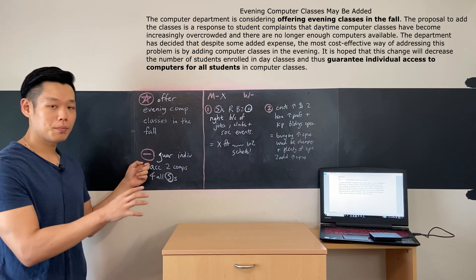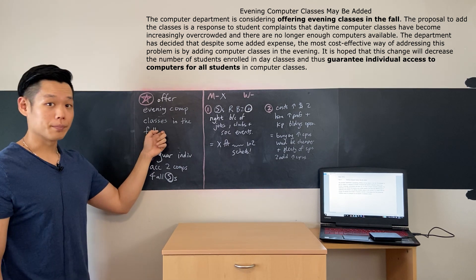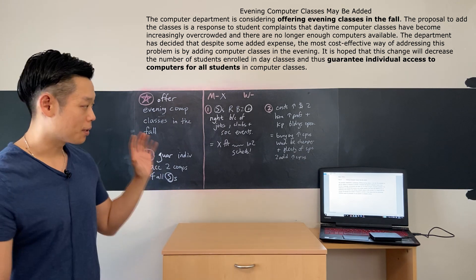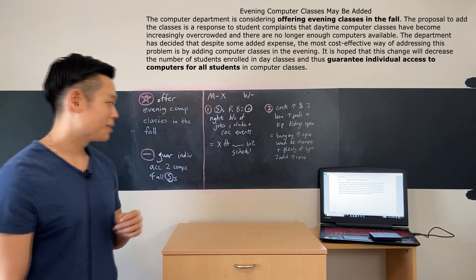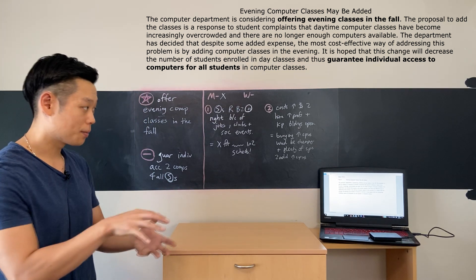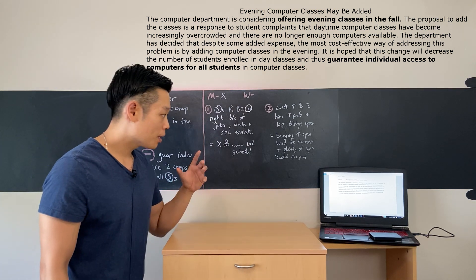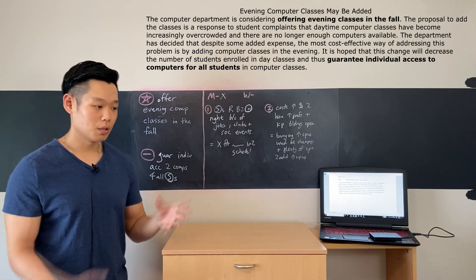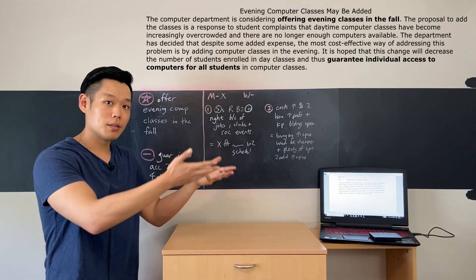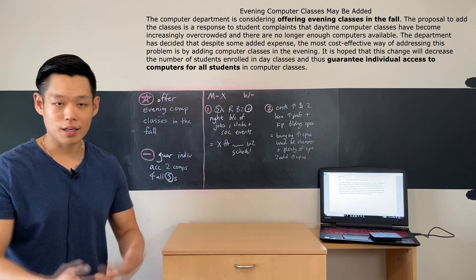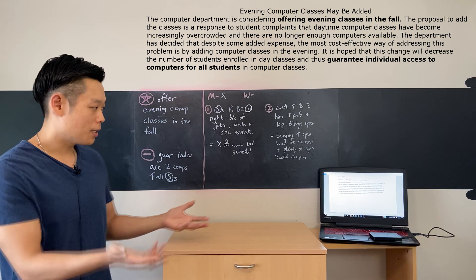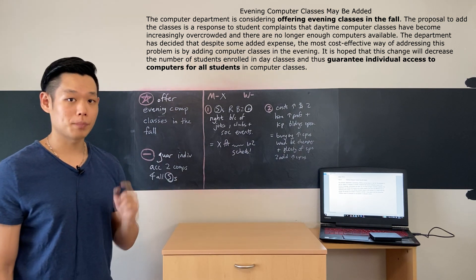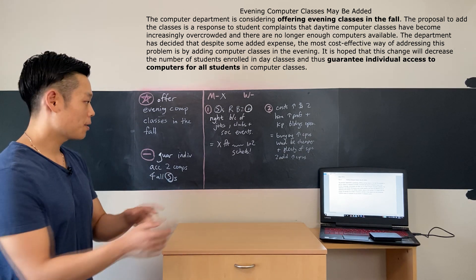Now let's keep looking at the passage to find the suitable information for the ending statement, which for an announcement has to be the advantage, the upside, or the benefit of the new plan. The proposal to add the class is a response—it's not an upside, it's a reason, I'm gonna skip that sentence. The department has decided that despite some added expense—that doesn't seem like it's leading to an upside, I'm gonna skip it. It is hoped that this change will decrease the number of students enrolled in day classes—although that is a benefit, it's nothing special. The second advantage, 'and thus guarantee individual access to computers for all students,' that's much more special and has a bigger impact, so I'm gonna pick that for the ending statement.